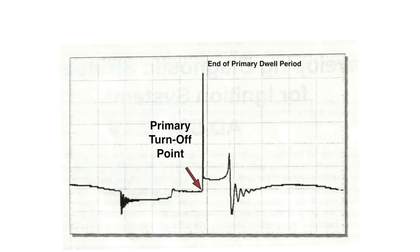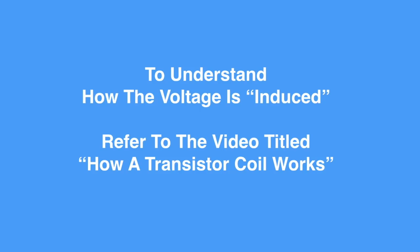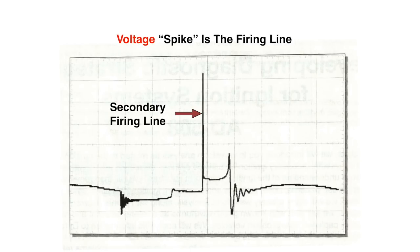This red arrow indicates the primary turnoff point — the end of the primary dwell period — it's no longer on. The module opens the primary circuit, the primary magnetic field collapses, and voltage is induced into the secondary coil windings. That voltage is multiplied by the number of coil turns. The secondary voltage discharge occurs — that is called the firing line or the voltage spike. It appears to be truly vertical at this time base, and if it's not truly vertical, that's a problem.